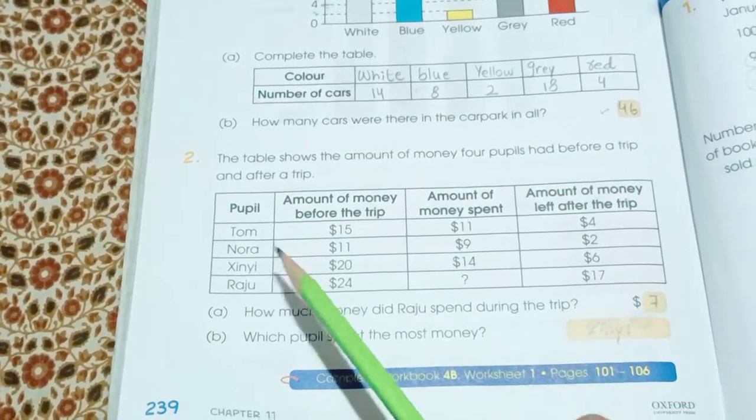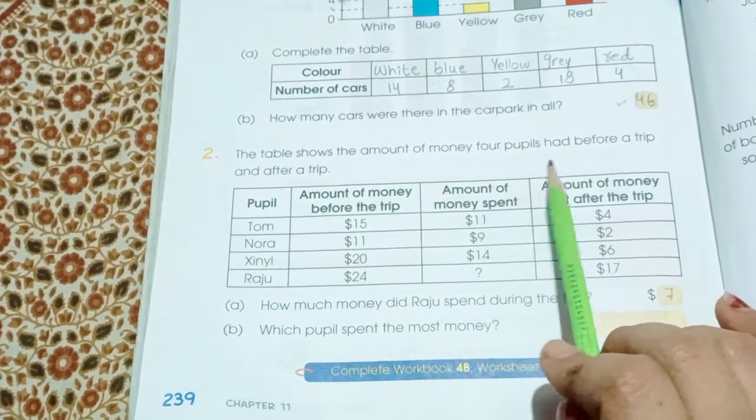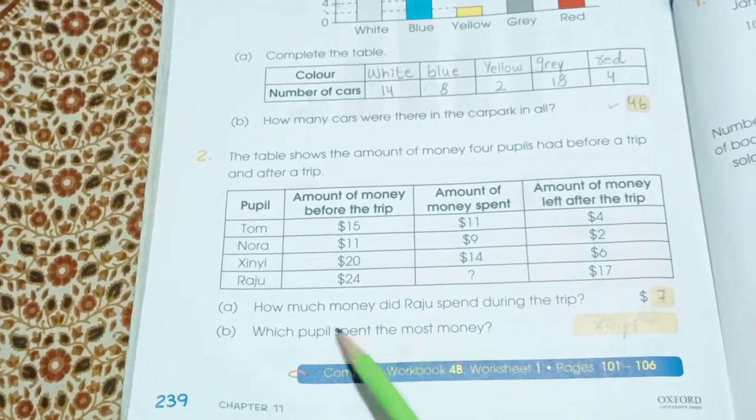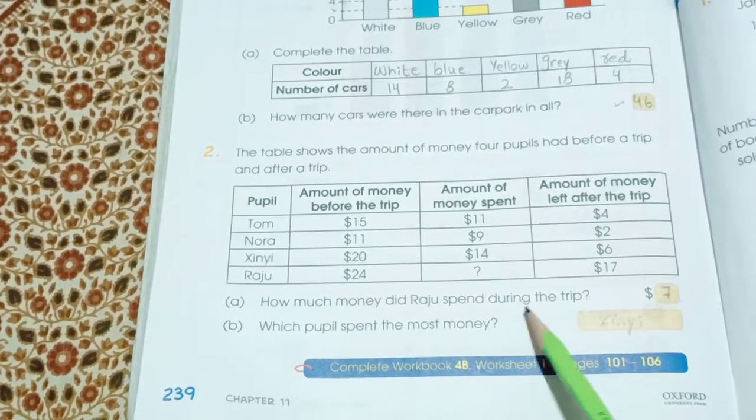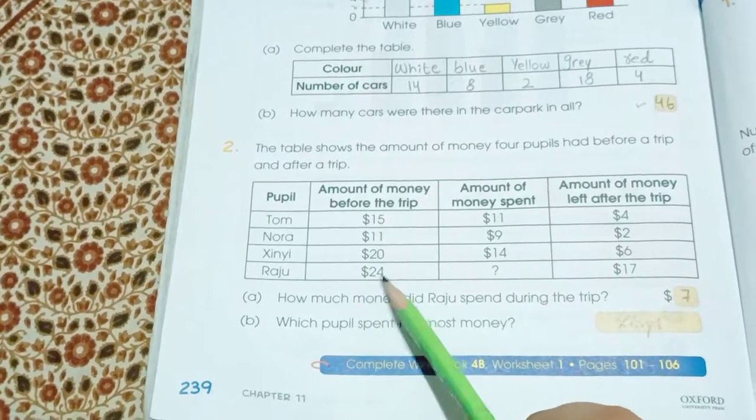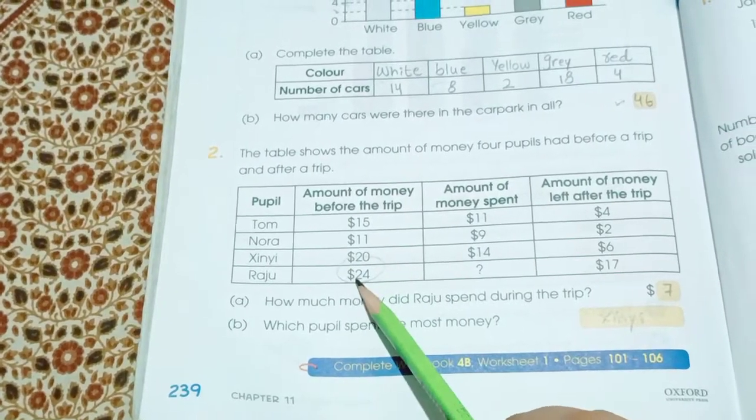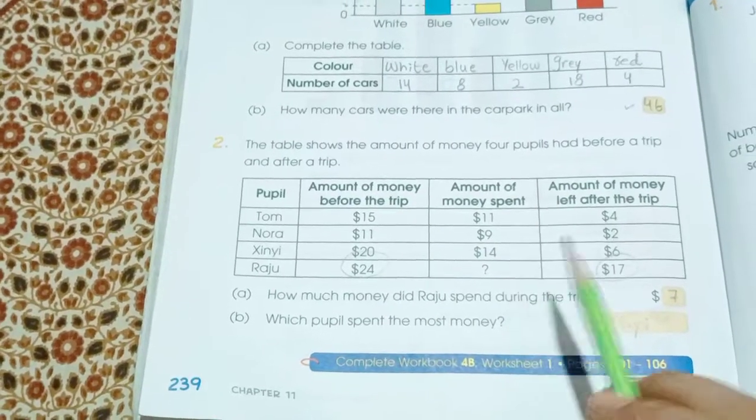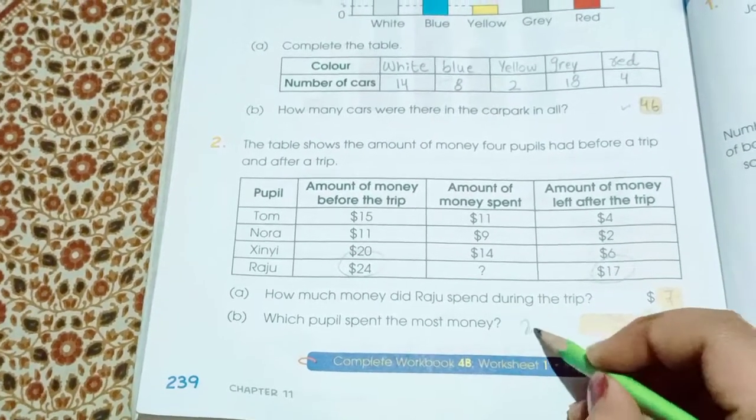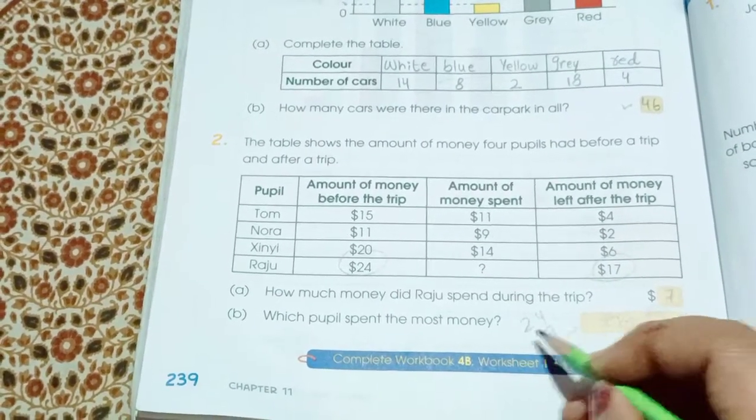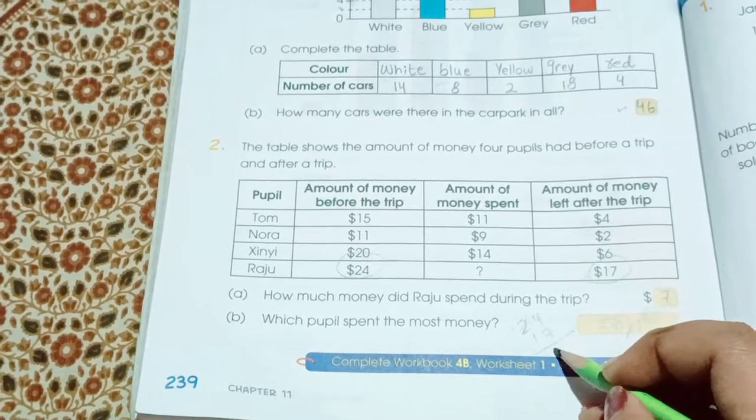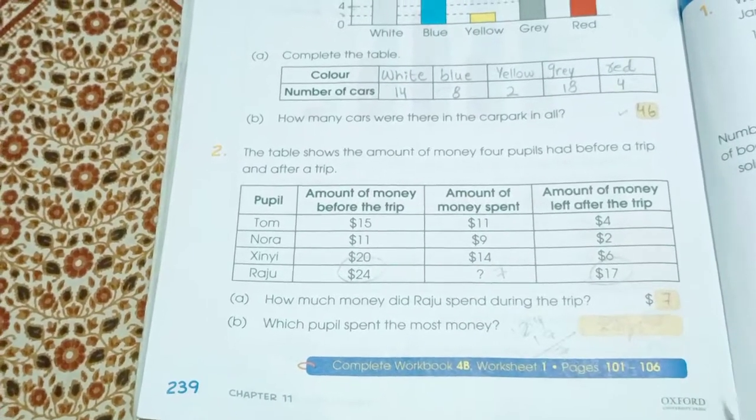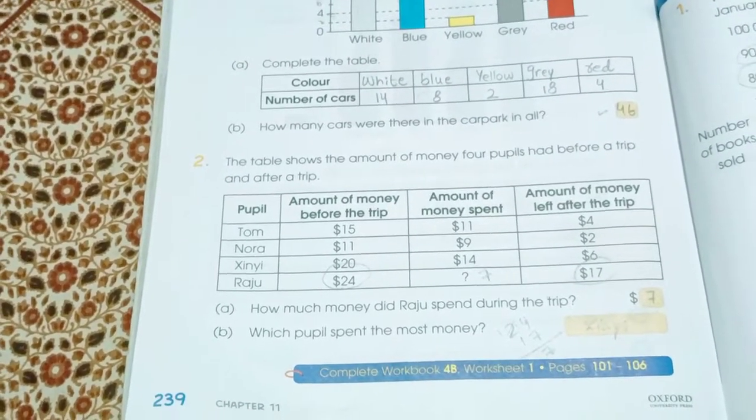Now here we have, the table shows the amount of money 4 people had before a trip and after the trip. So here is the amount. How much money did Raju spend during the trip? Raju has 24 and after the trip he has 17. So we have to find out the money he spent. We simply subtract 24 with 17 and we get the answer 7. So Raju spent 7 dollars at the trip.